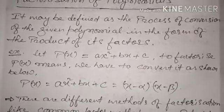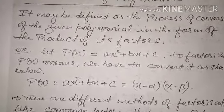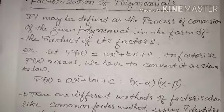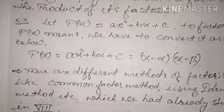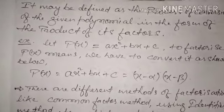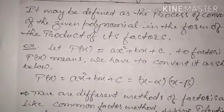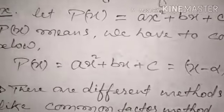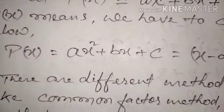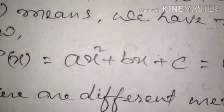Factorization may be defined as the process of conversion of the given polynomial into the form of the product of its factors. For example, the polynomial ax² + bx + c — it can contain addition, subtraction, multiplication, or division in this form.